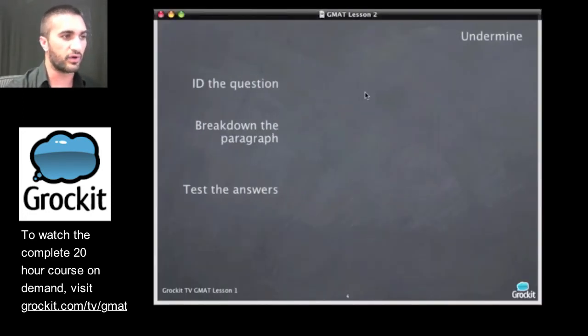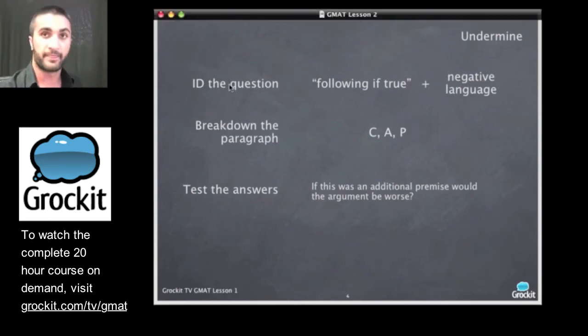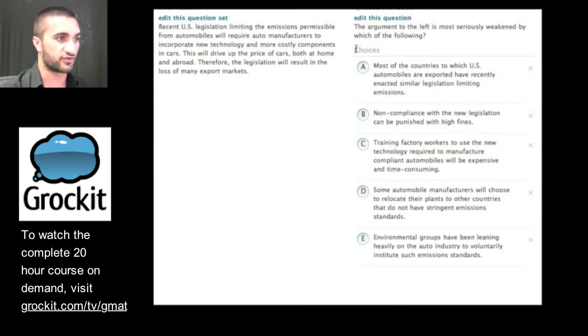So let's move on. Let's talk about undermine or weaken questions like we called them. We ID the question by looking for language like following if true plus some negative language. Again, we're looking for conclusions, assumptions, and premises. And we're asking ourselves if this was an additional premise, would the argument be worse? Let's go ahead and try one. Let's see here. So we have the argument to the left is most seriously weakened by which of the following. So let's go ahead and break down the paragraph. Go ahead and read it to yourself and break it down.